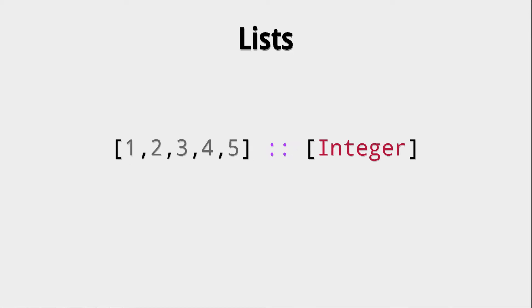Lists only have one internal type, meaning that you cannot build a list of, for example, integers and floats. It has to be a list of only integers if we want to build a list like this.